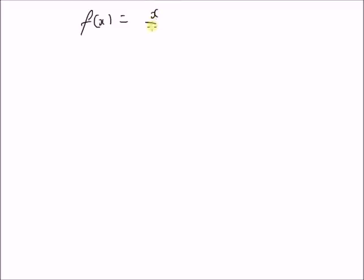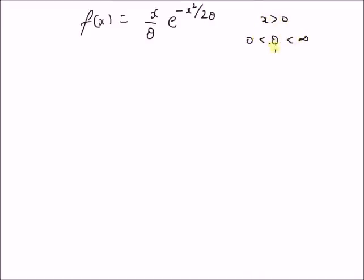That is, given the probability density function f of x equal to x by theta, e to the power minus x squared over 2 theta. This is the Rayleigh probability density function with values of x greater than 0 and theta between 0 and infinity — that is, a positive real number — and x is also a positive real number.